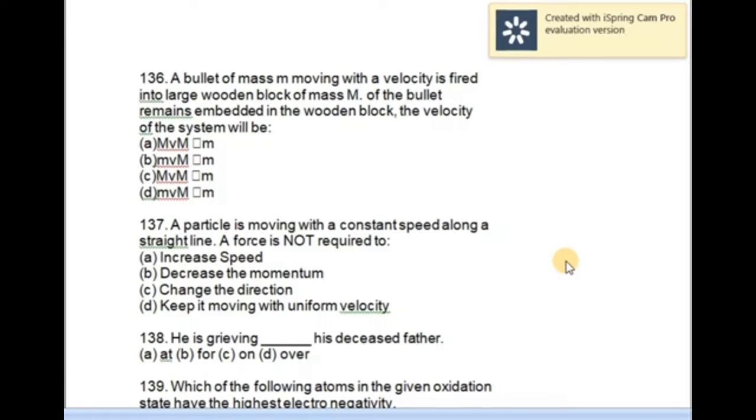So let's begin. If you can clear even one or two MCQs from this, you are already prepared. So let's begin. A bullet of mass m moving with a velocity is fired into large wooden block of mass M. If the bullet remains embedded in the wooden block, the velocity of the system will be - the correct option here is...